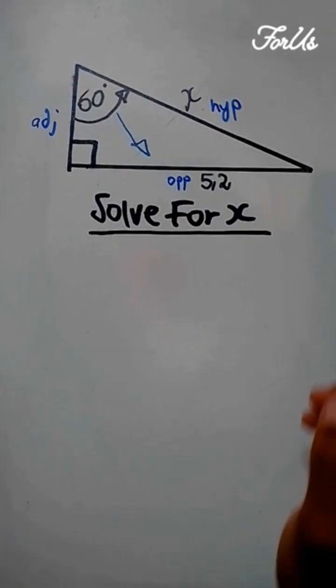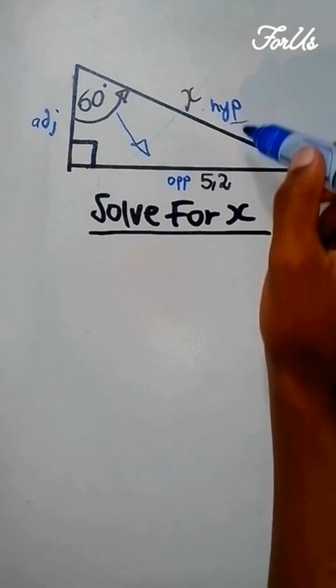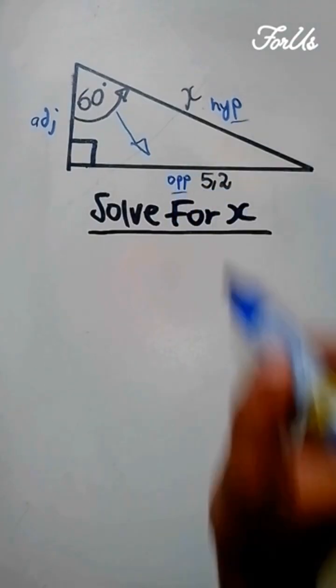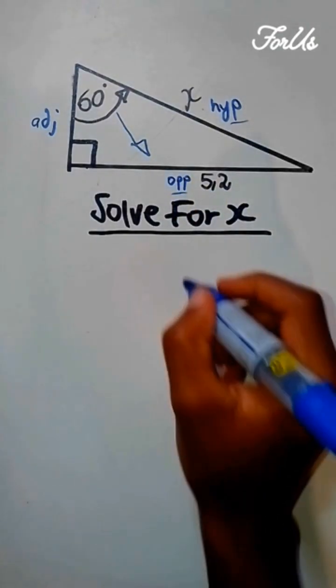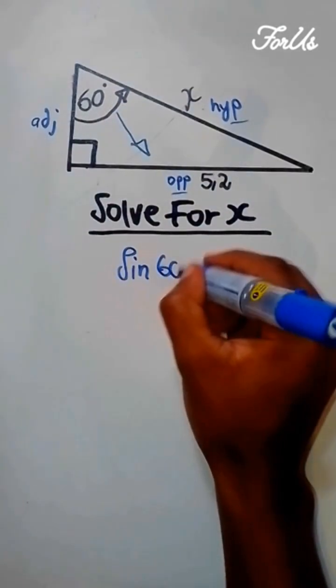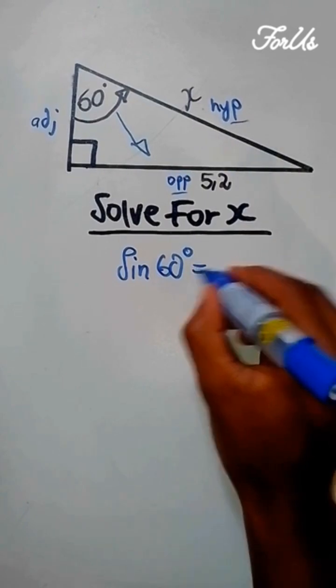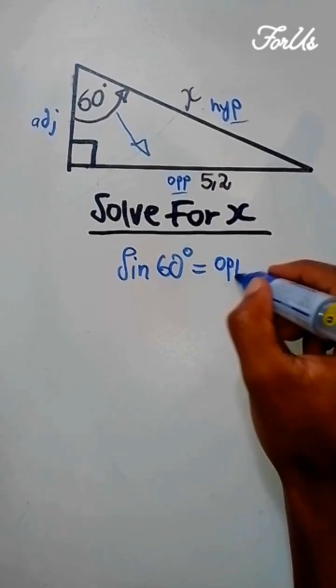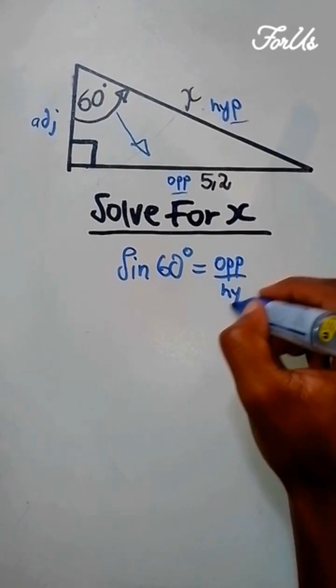Now, you're going to use a trig ratio that has hypotenuse and opposite, then it's going to be sine of 60 degrees, which is opposite divided by hypotenuse.